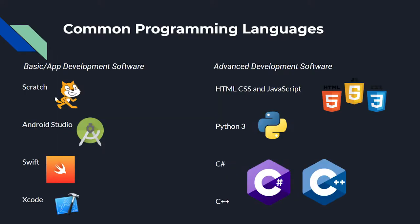Here are some of the common programming languages used for basic and advanced software development. Xcode with Swift is the language used for iOS development, and Android Studio is the main development software used for Android app development.